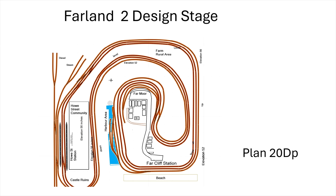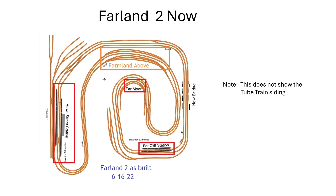On Plan 20-D version P, I had come up with the idea of a harbor and the beach; Howe Street was pretty evolved. Castle ruins, the rural area, and the elevations were set at that point — 52 inches from floor level for the Farmore track and beach, and 56 inches for the rest of the layout. This is pretty much the final version as built. It doesn't include the tube train siding, which is a more recent addition, but it's pretty well fleshed out as it is now. That was my journey in designing what I have right now.